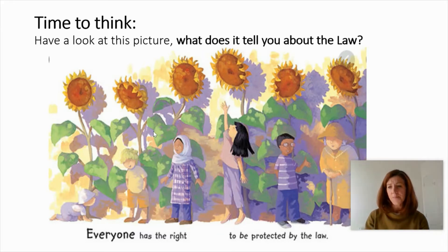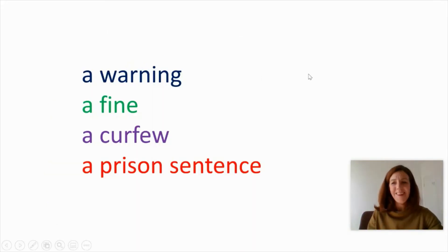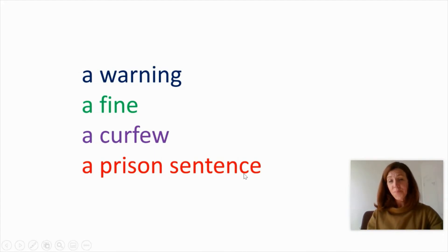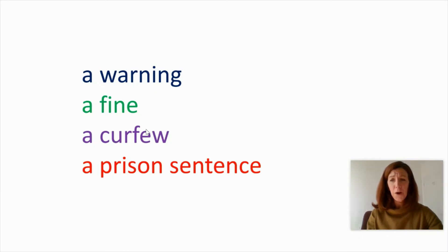Time to think: what are the different ways people can be punished for breaking the law? Make a little list now. I'm sure you came up with a prison sentence and maybe even a fine. But people are also given warnings, and some people may receive a curfew. A curfew is basically when you restrict somebody's movements — you might be asking them to stay at home between certain hours, often during the evening and night.